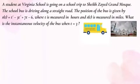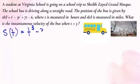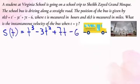The position of the bus is given by s(t) = t³ - 3t² + 7t - 6. To find the instantaneous velocity of the bus, we should take the derivative of the position function.